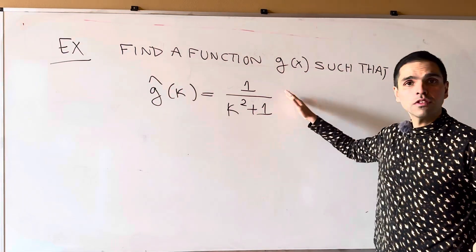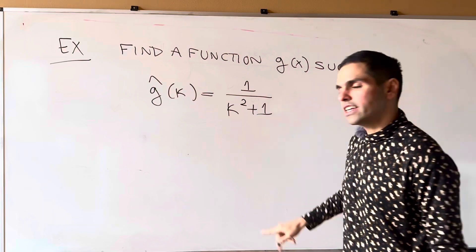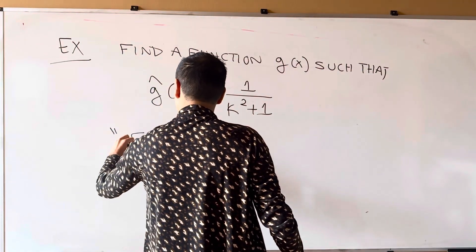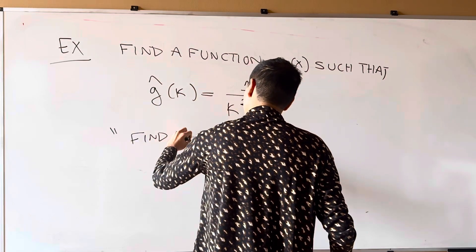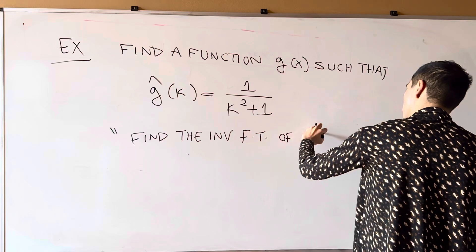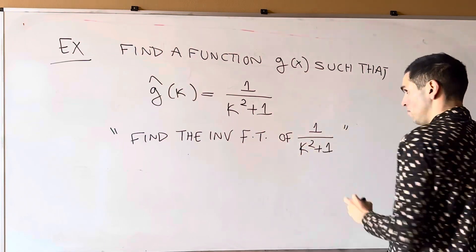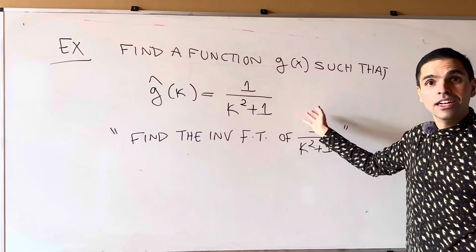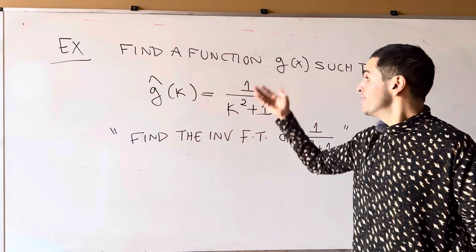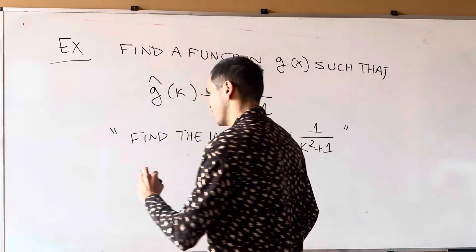In other words, this is sometimes phrased as, find the inverse Fourier transform of one over kappa squared plus one. So find the inverse Fourier transform of one over kappa squared plus one. And well, again, by our fact,